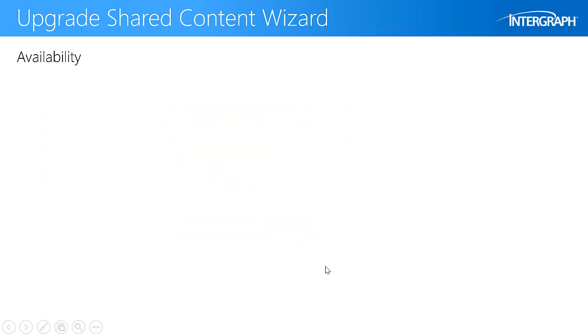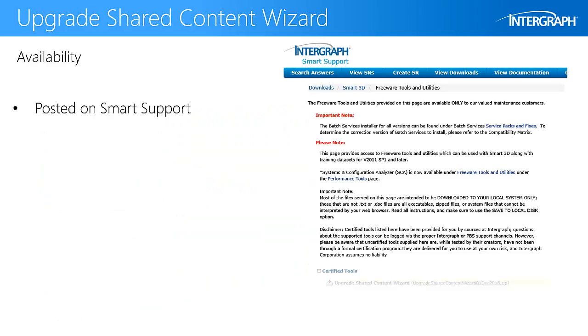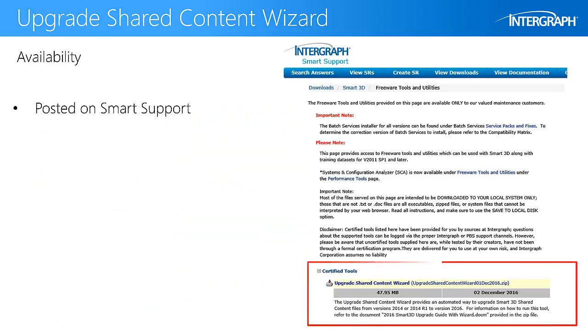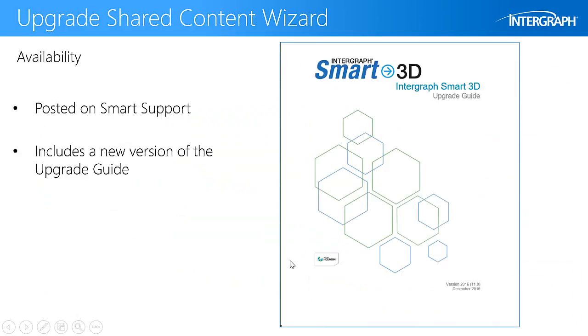The Upgrade Shared Content Wizard is available for download from the Intergraph Smart Support website as one of our certified tools. Before you use this tool, be sure to review the new version of the Upgrade Guide.